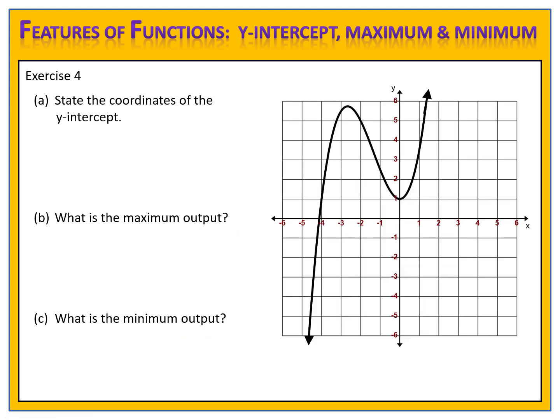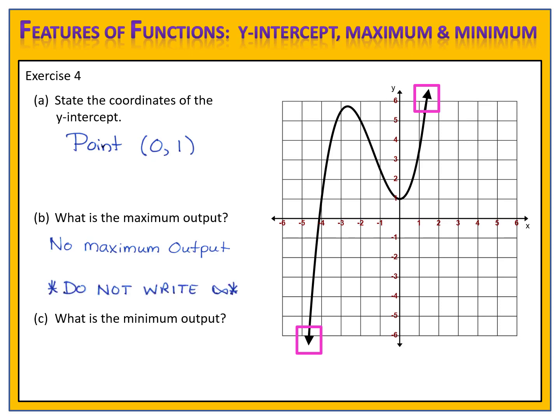Exercise 4 is for you to try. Can you identify the coordinates of the y-intercept as well as the maximum and minimum? Please pause the video here and come back when you're ready to compare answers. Let's compare answers. We first identify the y-intercept — the y-intercept is where the graph passes through the y-axis. How about the maximum output? Well, we have an arrow going upward, which means the graph goes up forever — there is no maximum output. Remember to be careful: do not write infinity as your output. Infinity is simply a direction, not an output. It isn't a number.